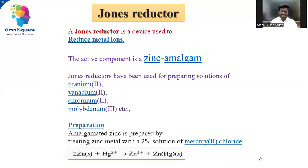Hi, do you know what is a Jones reductor? Yes, a Jones reductor is used for reducing metal ions from their higher oxidation state to lower oxidation state. It is a device basically used to reduce the metal ions.